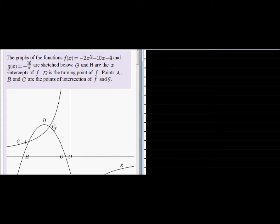G and H are the x-intercepts of f. There we see f, and there's g and h, the x-intercepts. D is the turning point of f, so there's the turning point. Points A, B, and C are the points of intersection of f and g.